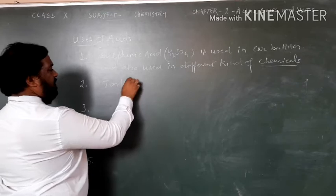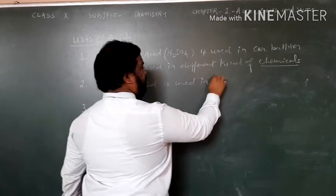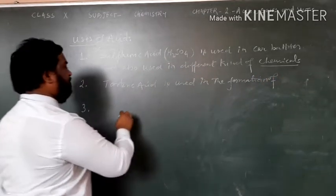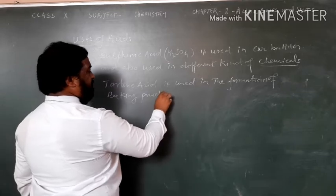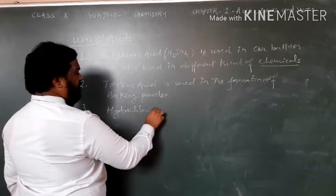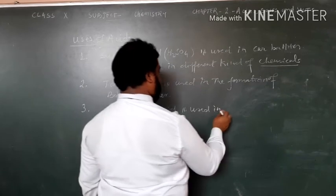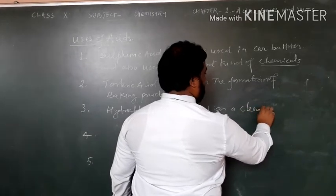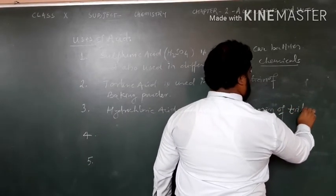Second is Tartaric Acid, used in the formation of baking powder. Next is Hydrochloric Acid, used as a cleansing agent of toilets.